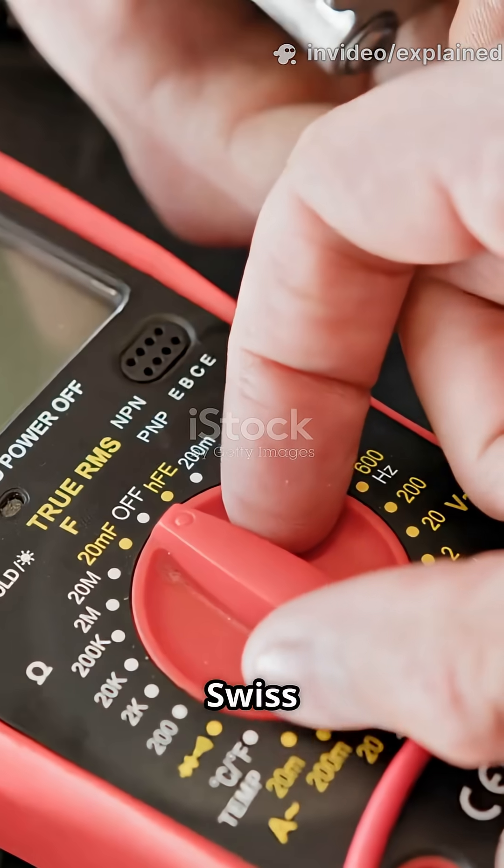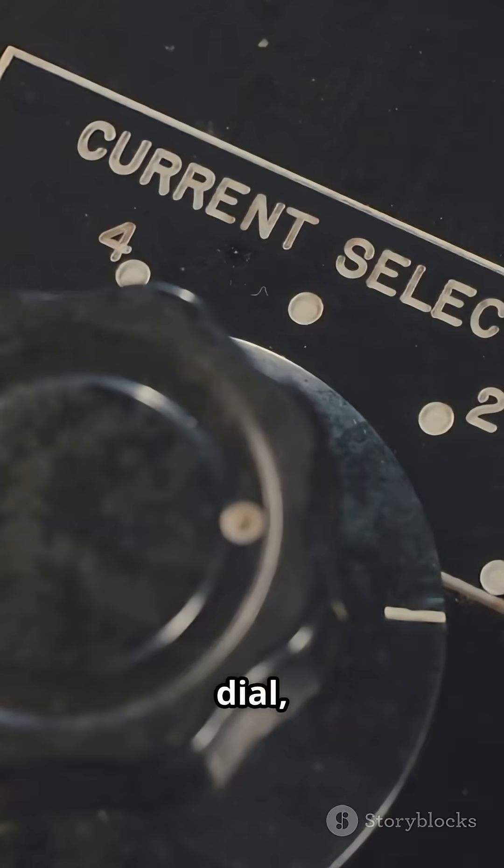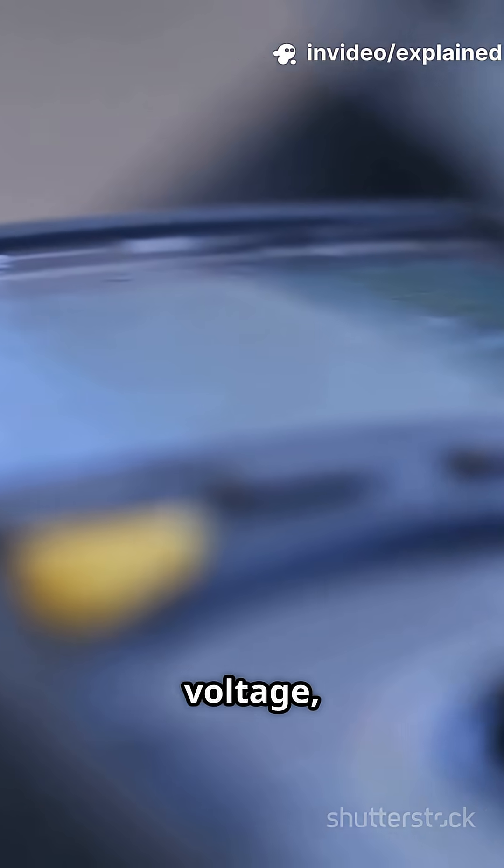A multimeter is basically the Swiss army knife of electronics. With just two probes and a flick of a dial, you can measure volts, amps, and ohms. Translation: voltage, current, and resistance.